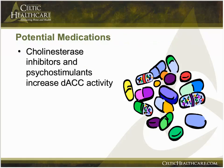Other potential medications showing some promise include cholinesterase inhibitors and psychostimulants. These show promise because they increase activity in the DACC — the dorsal anterior cingulate cortex — which may correlate to better function. Studies are ongoing in these areas and there is hope that these may help some individuals.